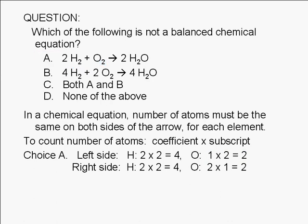Now let's take a look at the right-hand side. The coefficient of H2O is 2. The subscript of hydrogen in H2O is 2. Therefore, the number of hydrogen atoms on the right is 2 times 2, or 4.